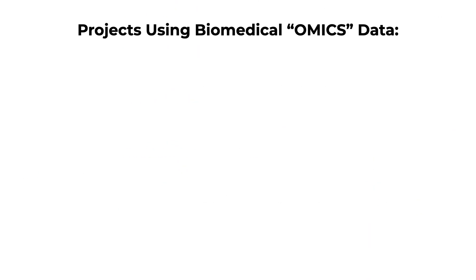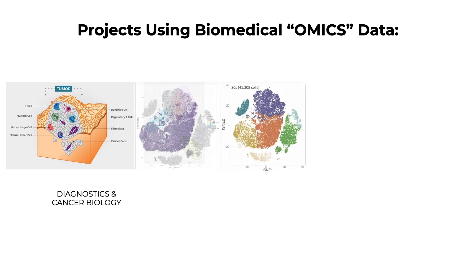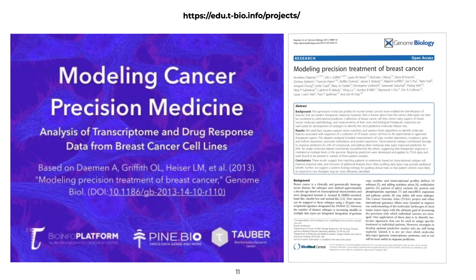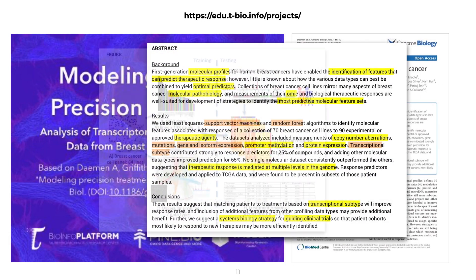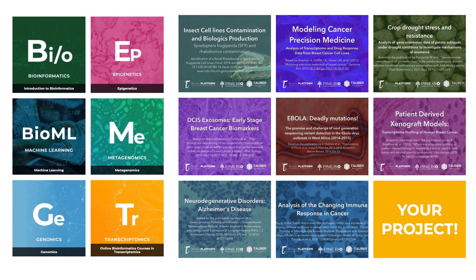You will also find a variety of curated research examples and learn about the logic behind each type of omics data used to study cancer, tissue biology, and the microbiome, using peer-reviewed publications in precision medicine, biotechnology, neuroscience, and infectious diseases.